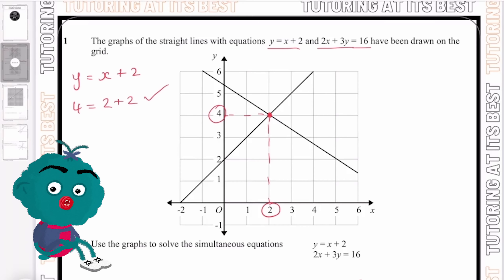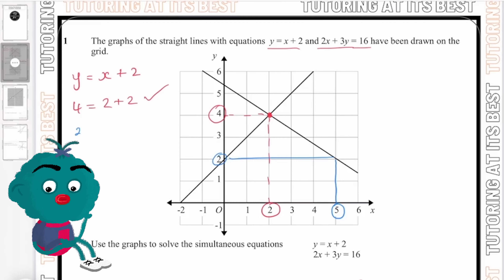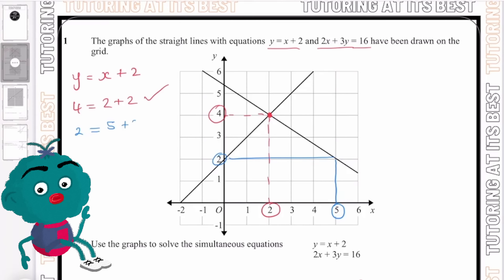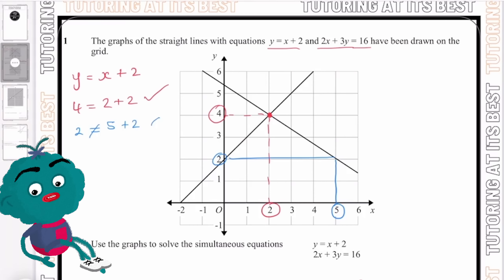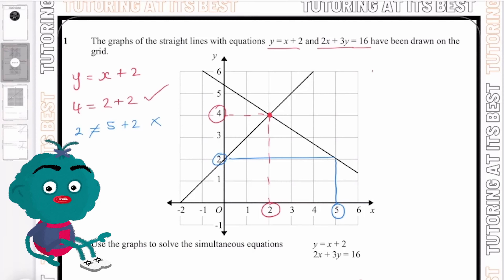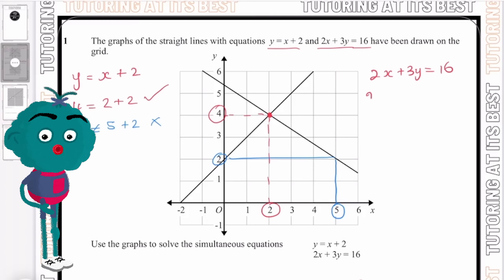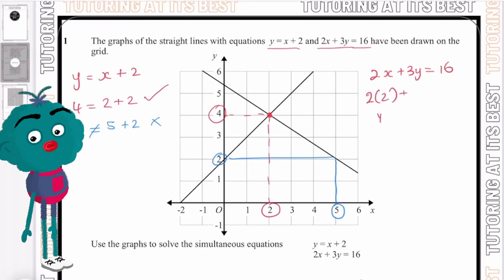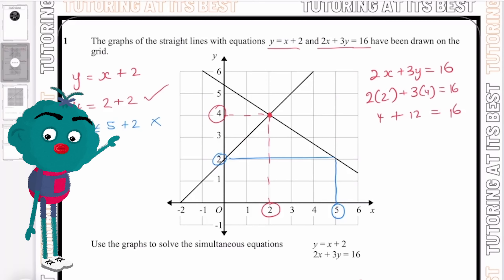Let's take a look at a different point — say x equals 5 and y equals 2. We can see that 5 plus 2 does not equal 2, so that is incorrect. Now let's check the second equation: 2x plus 3y equals 16. With x equals 2 and y equals 4, we get 2 times 2 equals 4, and 3 times 4 equals 12, and 4 plus 12 equals 16. Correct!